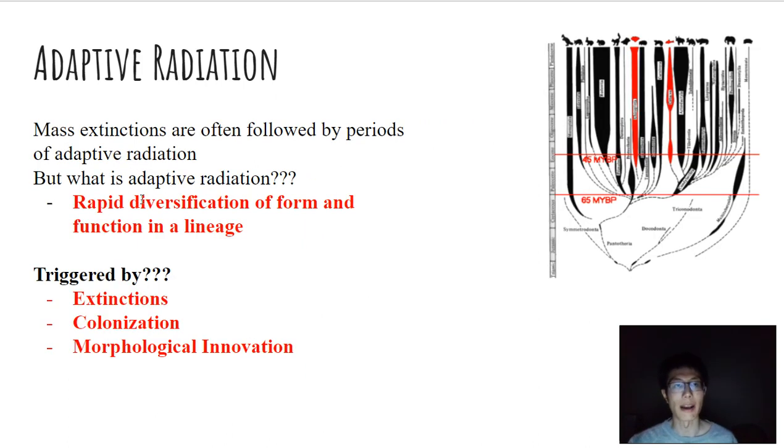So at the end of the day, just to summarize, adaptive radiation is just a rapid diversification of form and function in a lineage of organisms, as shown here, and in many other examples like the honeycreepers, as well as the finches and snakes. And it's often triggered by three main events. We have extinctions that allowed for ecological release and new opportunities. Colonization, which again can allow for new opportunities. And then finally, morphological innovation, which once again allows for ecological opportunities.